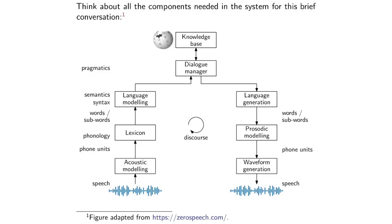Let me run through that again and unpack things a bit more, going from the bottom to the top and back again. When you pass speech through the acoustic model, it basically breaks up the speech stream into the smallest units used in the language. We call these units phones, and they are normally language independent — all languages on earth use a set of phones. A linguist who knows the International Phonetic Alphabet can write down the phones for an utterance even in a language they don't know. The study of phones is called phonetics.